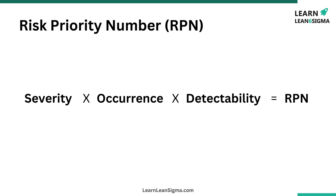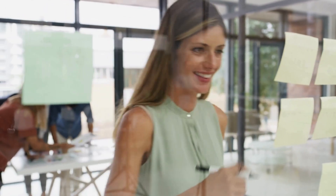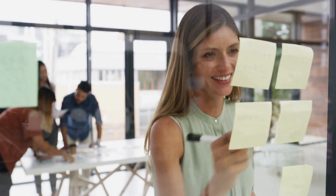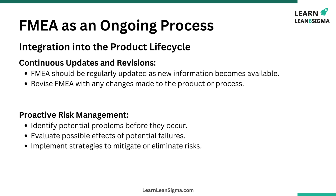This is done by multiplying the severity, occurrence, and detectability. This allows us to focus our resources and efforts on addressing the most critical issues first. The structured nature of FMEA ensures that no potential failure is overlooked and that all possible effects and causes are thoroughly considered. Additionally, FMEA is not just a one-time activity — it's an ongoing process that should be integrated into the life cycle of a product or process.